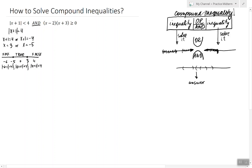The solution set of this inequality is all values between negative 5 and 3. Do I include the boundary points? No, I don't, because the inequality was strict. So here I've produced the solution set of the first inequality.